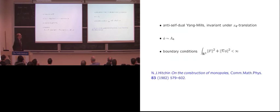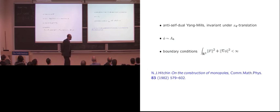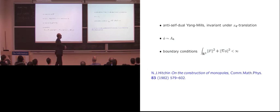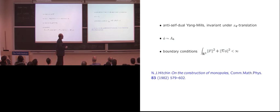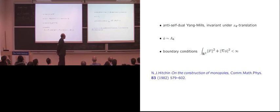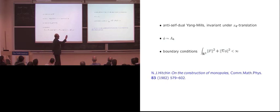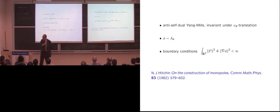For monopoles you have three covariant derivatives, the curvature has three components, and three equations relate the covariant derivative of phi to the components of the curvature — like the non-Abelian versions of grad phi equals curl of A. These equations are special cases of the anti-self-dual Yang-Mills equations, where the fourth component of the connection becomes the Higgs field downstairs when you require invariance under translation in the fourth direction.